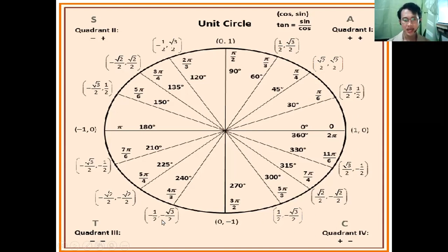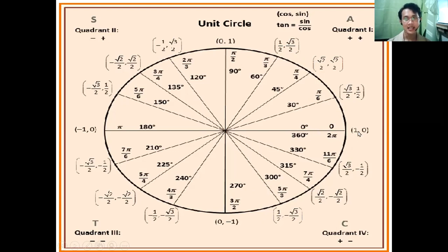The values outside the circle are the coordinates of cosine and sine. Cosine stands for the value of x and sine stands for the value of y. Each angle or radian measure has its coordinates. For 360 degrees and 0 degrees, they share the same coordinates — x equals 1 and y equals 0. This unit circle is very important as we move further into our topic in trigonometry.